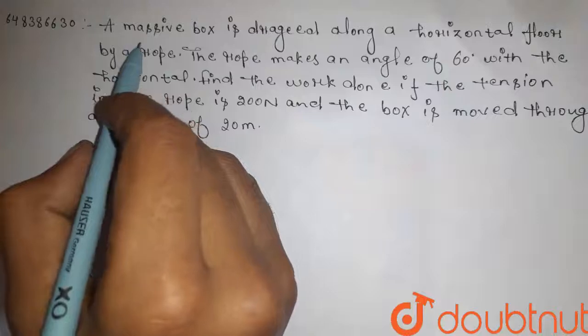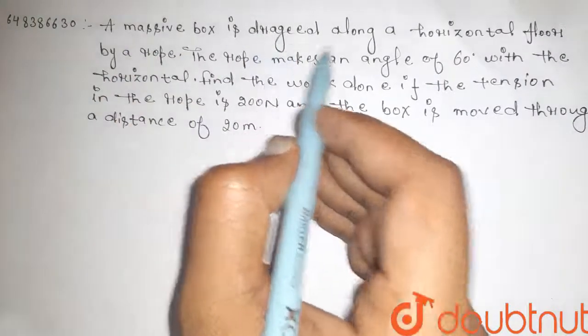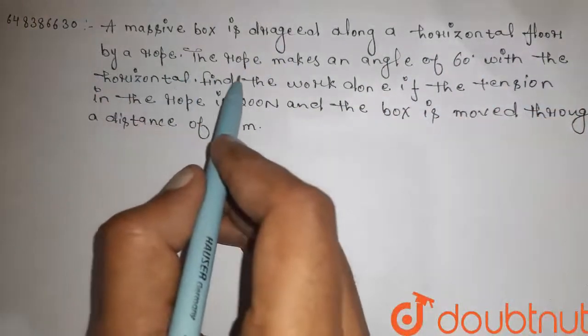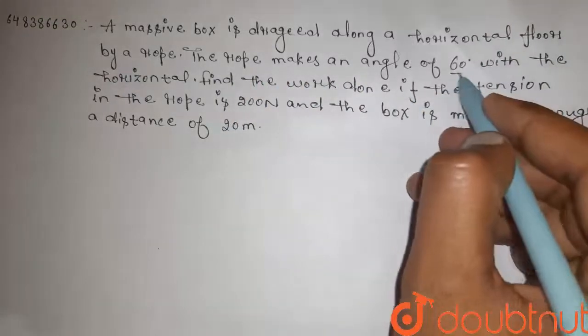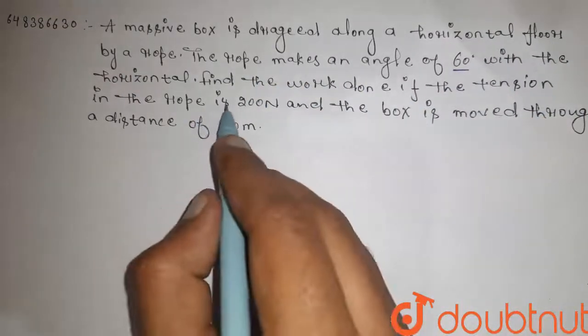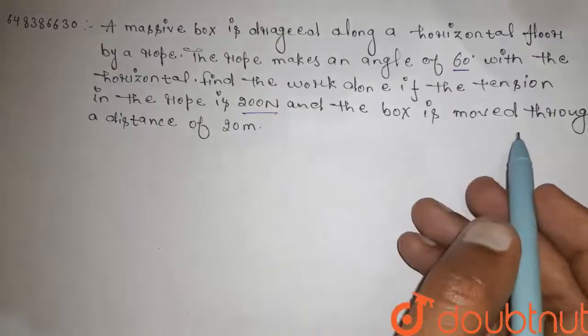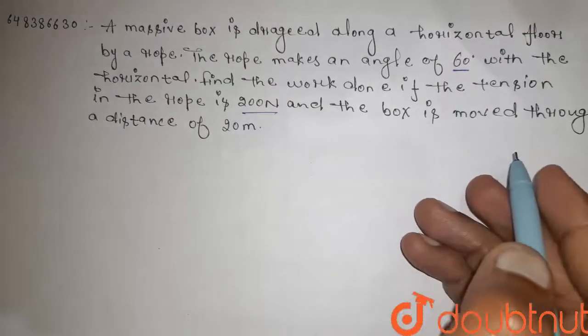Hi guys, here is the question. A massive box is dragged along a horizontal floor by a rope. The rope makes an angle of 60 degrees with the horizontal. Find the work done if the tension in the rope is 200 N and the box moves through the distance 20 meter.